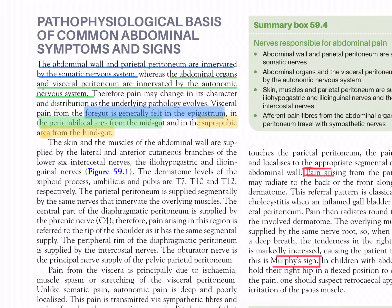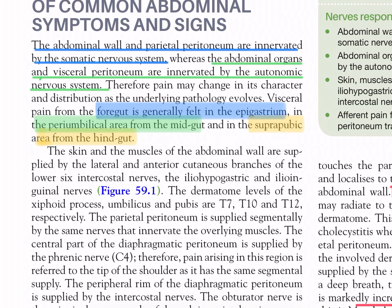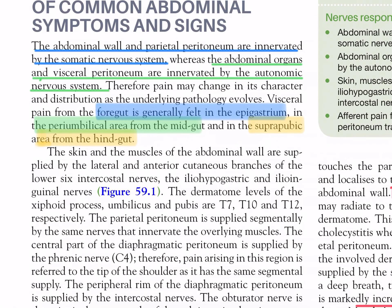Pathophysiological basis of common abdominal symptoms and signs: the abdominal wall and parietal peritoneum are innervated by the somatic nervous system, whereas the abdominal organs and visceral peritoneum are innervated by the autonomic nervous system. Therefore, pain may change in its character and distribution as the underlying pathology evolves. Visceral pain from the foregut is generally felt in the epigastrium, in the periumbilical area from the midgut, and in the suprapubic area from the hindgut.